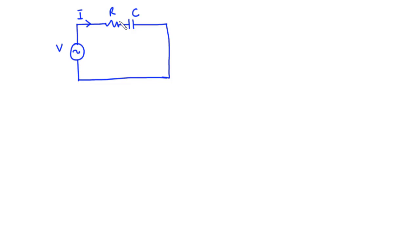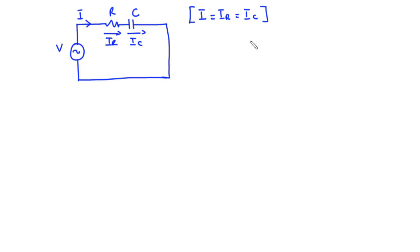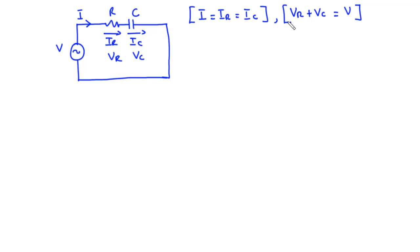Since the two passive elements are connected in series, the same value of current flows through each of them. The current through the resistor is IR and through the capacitor is IC, so I equals IR equals IC. Considering the voltage across the resistor as VR and across the capacitor as VC, according to Kirchhoff's voltage law, VR plus VC equals the source voltage V. Note that the voltages and currents here are all phasors.